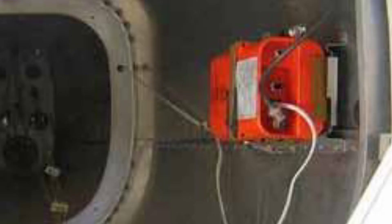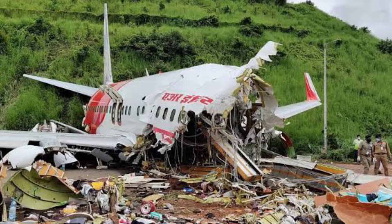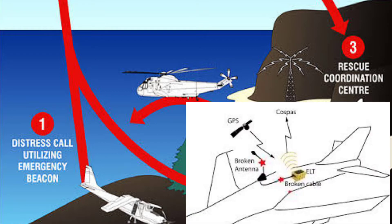An Emergency Locator Transmitter is an independent battery-powered transmitter, activated by excessive g-force experienced during an aircraft crash. When a plane crashes, the ELT experiences a gravity force and the ELT transmitter is activated.